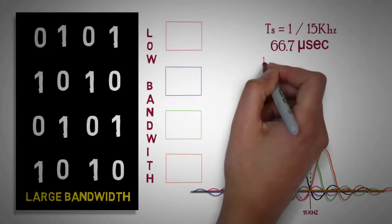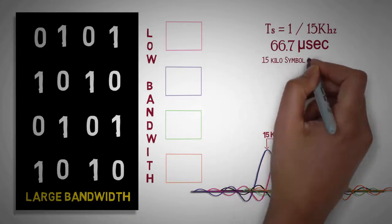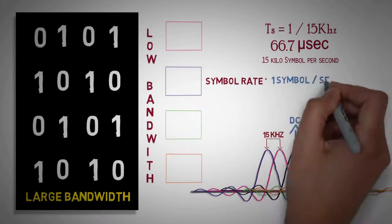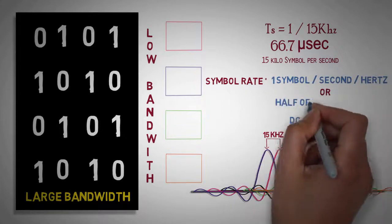Consequently, one sub-carrier can provide a symbol rate of 15 kilosymbols per second, which is analogous to having a symbol rate of 1 symbol per second for 1 hertz of bandwidth or half a Nyquist rate.